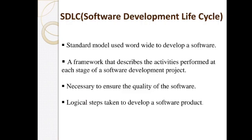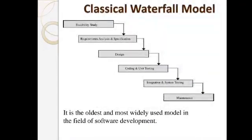The SDLC is necessary to ensure the quality of software. It has logical steps taken to develop a software product. Here we can see the classical waterfall model of the SDLC. It includes: feasibility study, requirements and analysis and specification, design, coding and testing, integration and system testing, and maintenance. It provides the necessary steps to improve software quality.